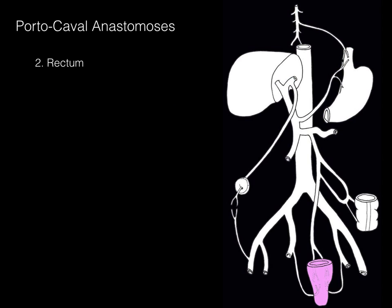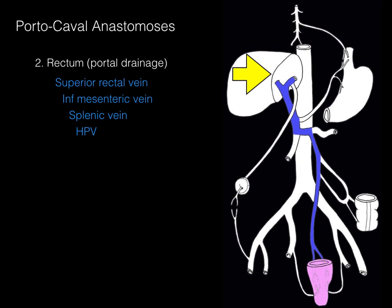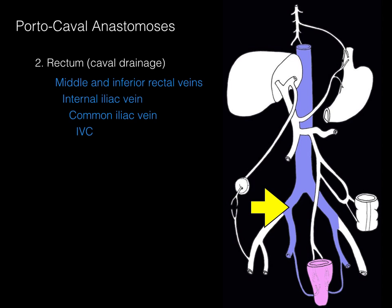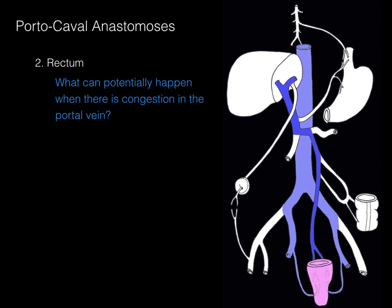Second: the rectum. The rectum has both portal and caval drainage. For portal drainage, blood from the rectum goes through the superior rectal vein into the inferior mesenteric vein, then the splenic vein, the hepatic portal vein, and into the liver. For caval drainage, blood from the same part of the rectum drains through the middle and inferior rectal veins into the internal iliac vein, then the common iliac vein, into the inferior vena cava, and back to the heart. With portal hypertension, blood flows hepatofugally (backwards) through the portal vein and backs up all the way to the rectum, then courses through those inferior and middle rectal veins to the caval system.